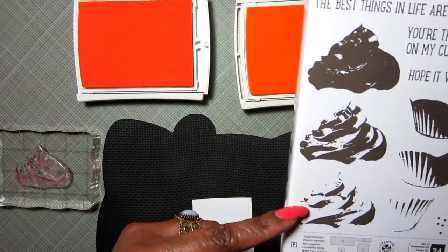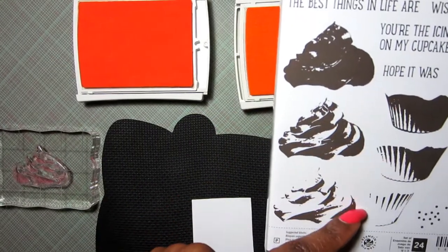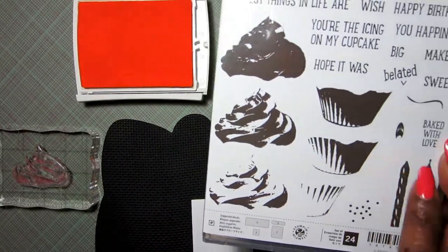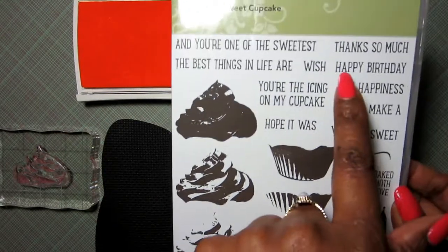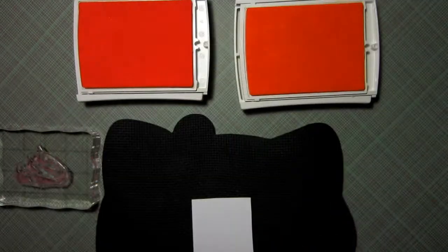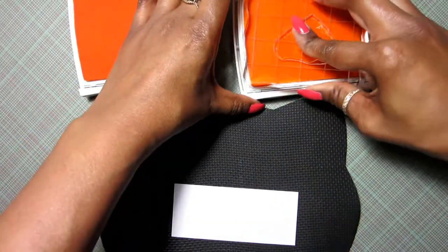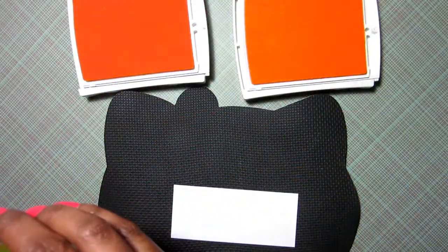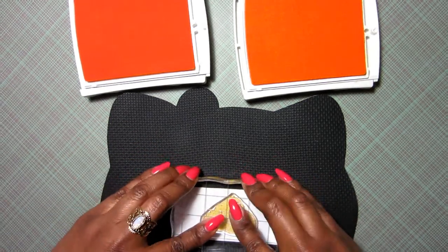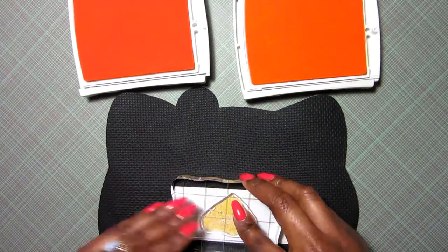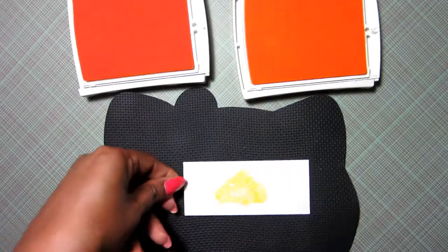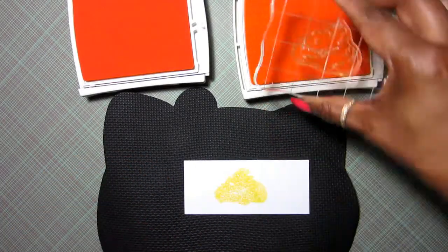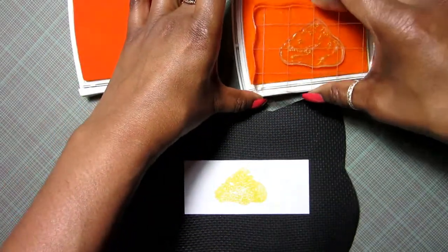For the cupcake stamp set, I'm just going to be using the cupcakes, the cupcake wrapper, the candle, and a sentiment, the Happy Birthday one. I have two ink colors here, both really old and retired: Yo-Yo Yellow and Summer Sun. To start, I'm using the base layer of the stamp set. There's three parts to this stamp. For the first layer, I'm stamping with Yo-Yo Yellow and I'm going to stamp off so I can get a nice light shade.